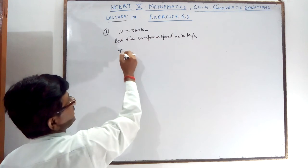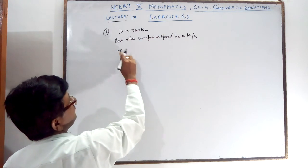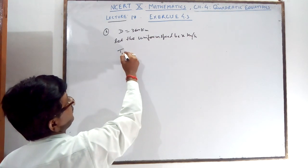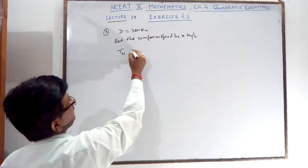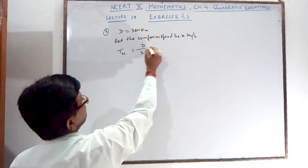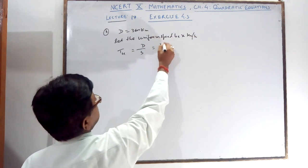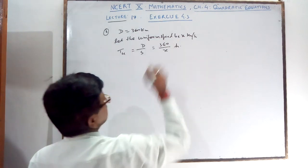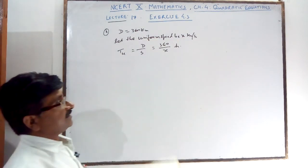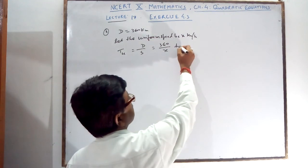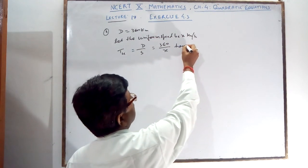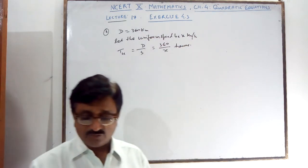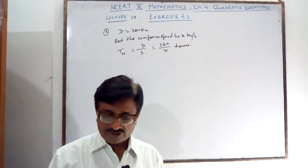So the time taken with uniform speed — time with uniform speed you can write — distance upon speed, that is 360 upon x. This is the time taken when the train is moving with uniform speed.